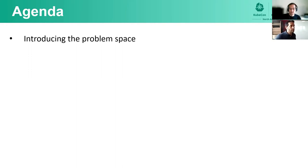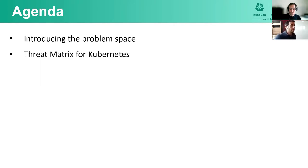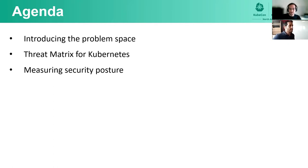Please allow me to outline what you're expected to get from today's talk. First, we will introduce the problem space and what led us to focus on the orchestration layer for containers. Second, the threat matrix for Kubernetes — this is the outcome of our research of the Kubernetes threat landscape. We will also go over an attack we witnessed and unfold it using the matrix. Then we will present an example of how organizations can leverage this knowledge base to better secure their Kubernetes workloads.